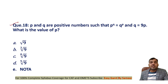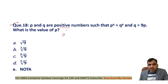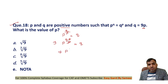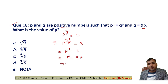Question number 18: p and q are positive numbers such that p^q = q^p and q = 9p. Find p. From p^q = q^p we get p^(q/p) = q. Substituting q = 9p: p^(9p/p) = 9p → p^9 = 9p → p^8 = 9, so p = 9^(1/8), the eighth root of 9. Option C is the correct answer.